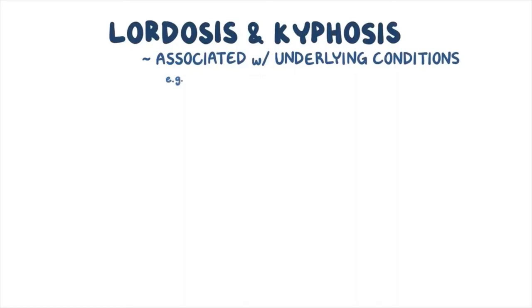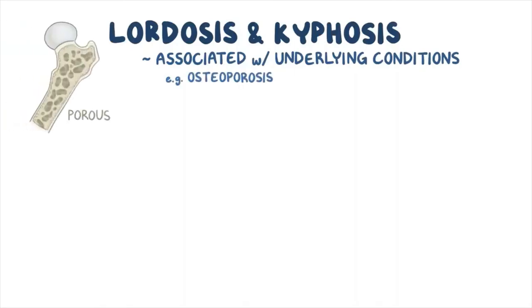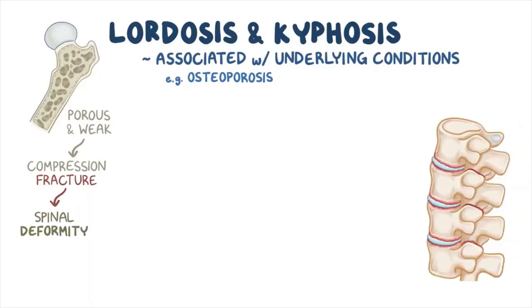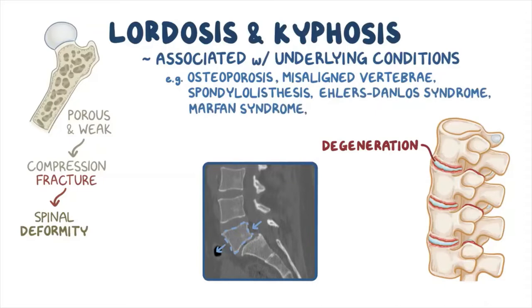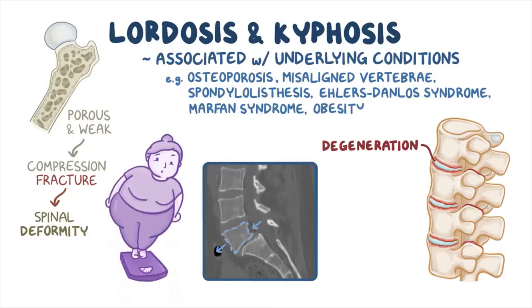Lordosis and kyphosis are typically associated with underlying conditions. In osteoporosis, bones become porous and weak, developing compression fractures and causing spinal deformity that can impinge on nearby nerves. Misaligned vertebrae can also exert too much pressure on intervertebral discs, causing degeneration. Other conditions include spondylolisthesis, Ehlers-Danlos syndrome, Marfan syndrome, obesity, and inflammation of discs from overuse or sports injuries.